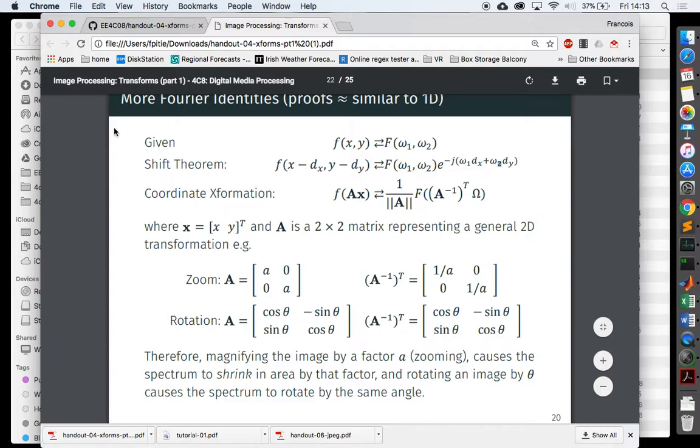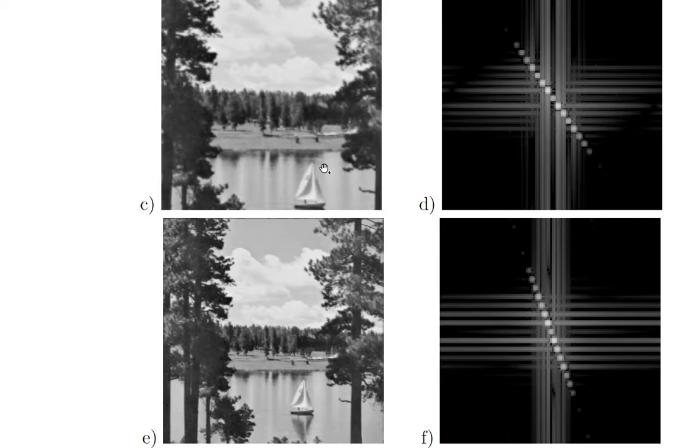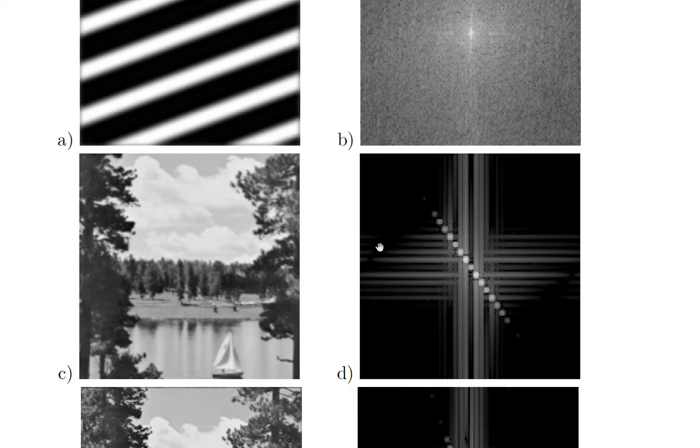But if you come back to this picture, the crop version, because you zoomed in, looks a bit more blurred. All right, so you have effectively, you know, because it looks more blurred, you have less high frequencies.